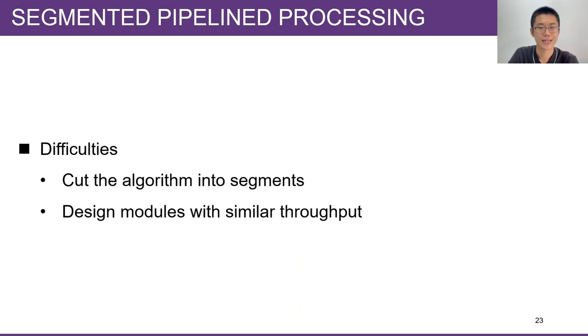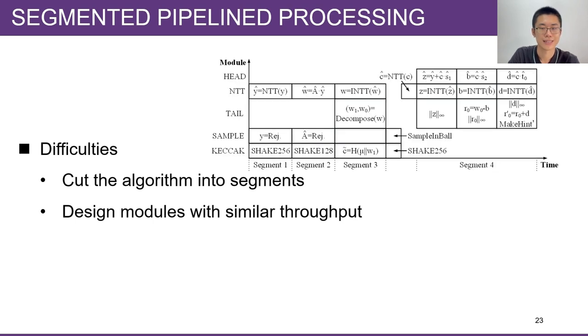To use this method, we face two main difficulties. The first is how to cut the algorithm into segments with high utilization of the modules. We drew the segment diagram based on data dependency and making the most use of the main modules, Keccak and NTT. The second difficulty is that we need to make the modules have similar throughput, so the pipeline can run with less blocking and stalling.